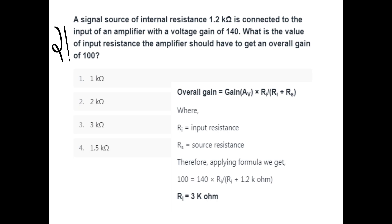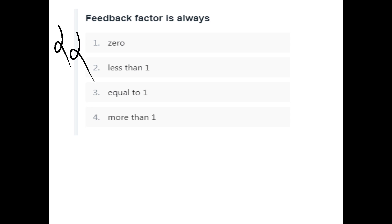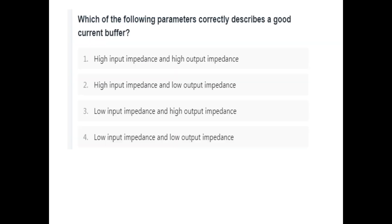A signal source of resistance 1.2 kOhm is connected to an amplifier input with voltage gain. We need an overall gain of 100 by substituting 3 kOhm. Option C. The feedback factor is always less than 1. A good current buffer has low input impedance and high output impedance.